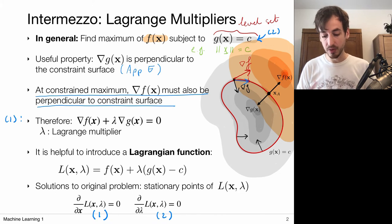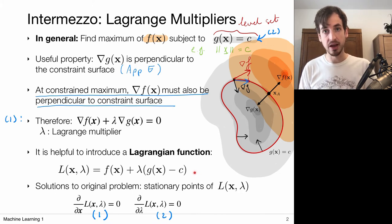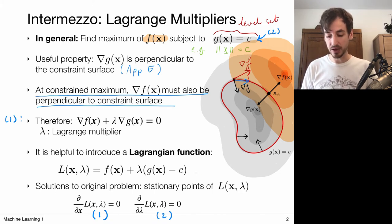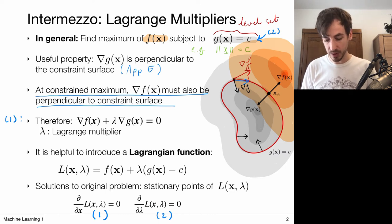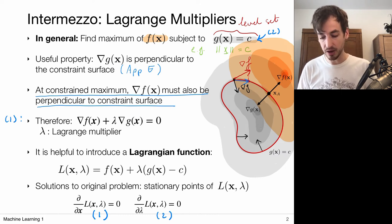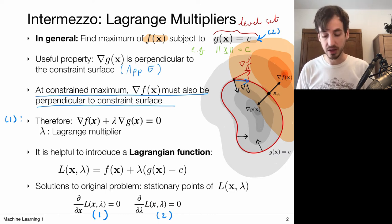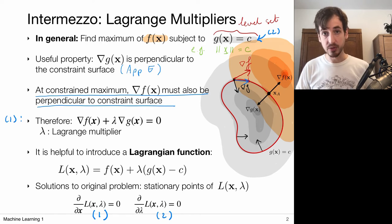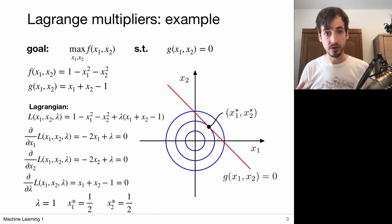So we can introduce a Lagrangian function, and if we find an optimal location in this Lagrangian with respect to x and lambda, we have solved our constraint optimization problem. Let's take a look at a concrete example.